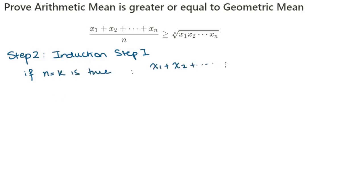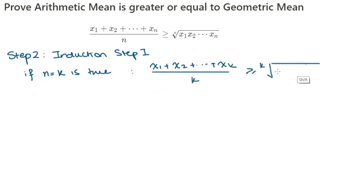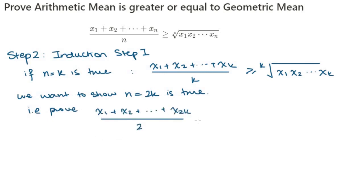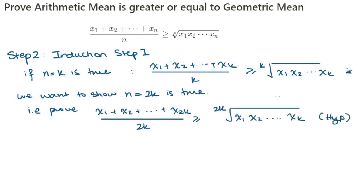So if (x₁ + x₂ + ⋯ + xₖ)/k ≥ ᵏ√(x₁x₂⋯xₖ), then we want to prove that n equals 2k is true: (x₁ + x₂ + ⋯ + x₂ₖ)/(2k) ≥ ²ᵏ√(x₁x₂⋯x₂ₖ). That's our hypothesis, and the top line is our star.